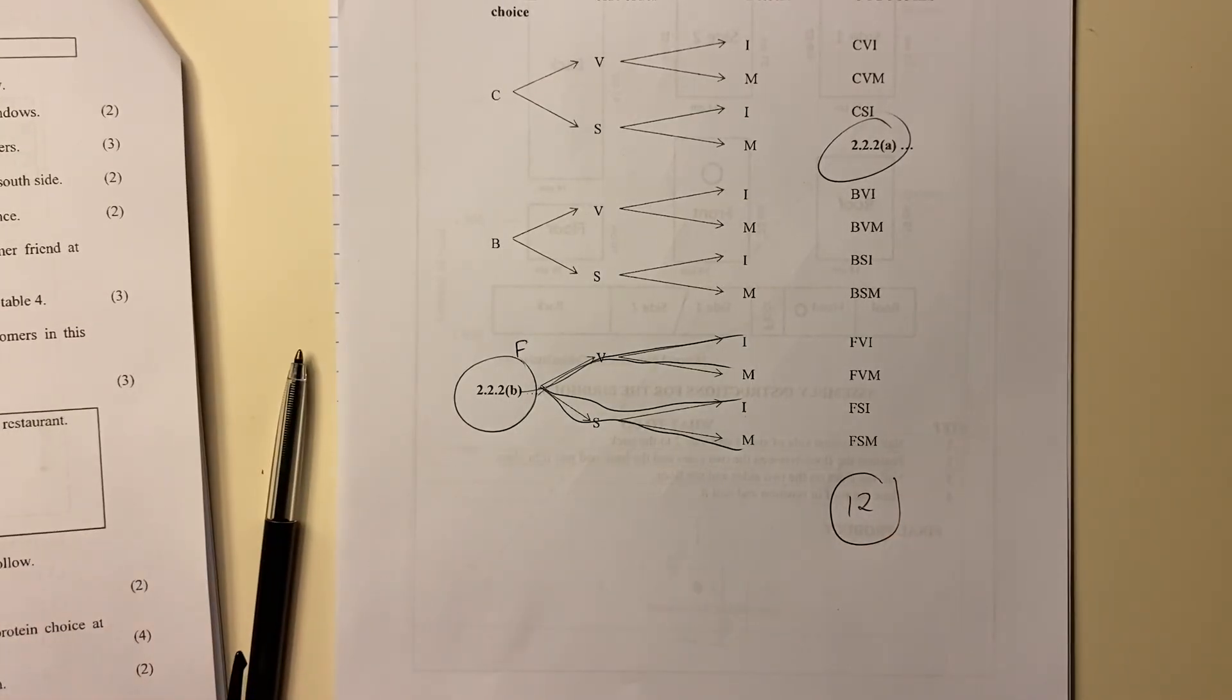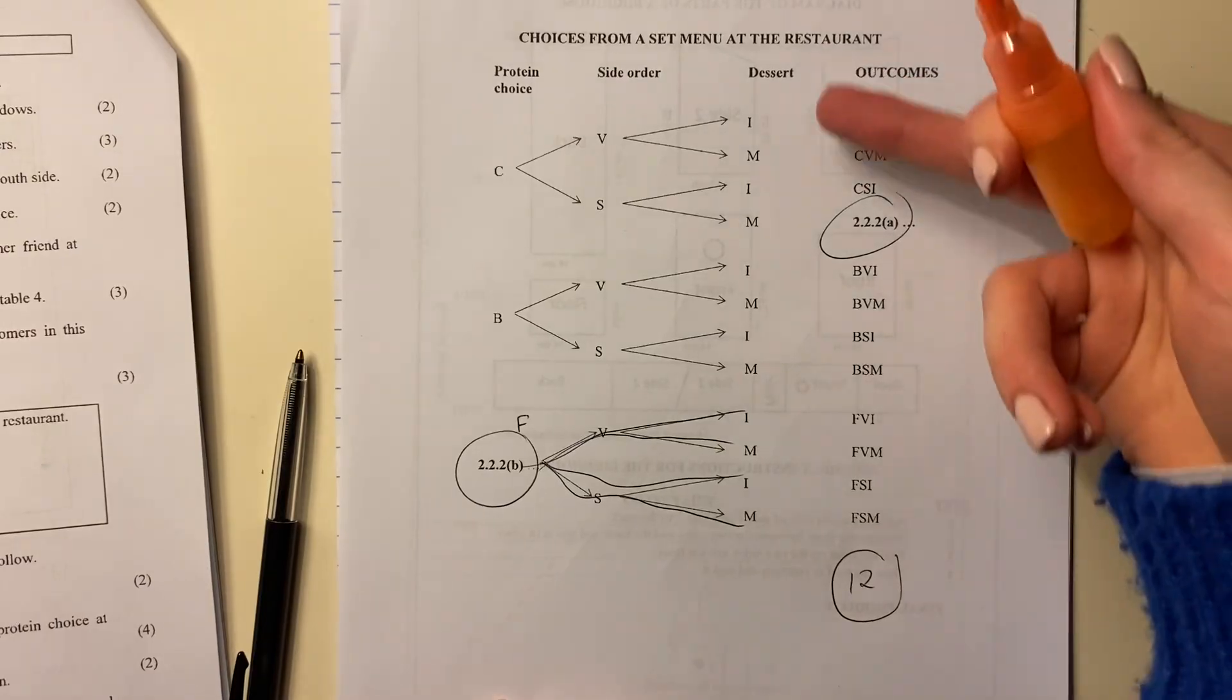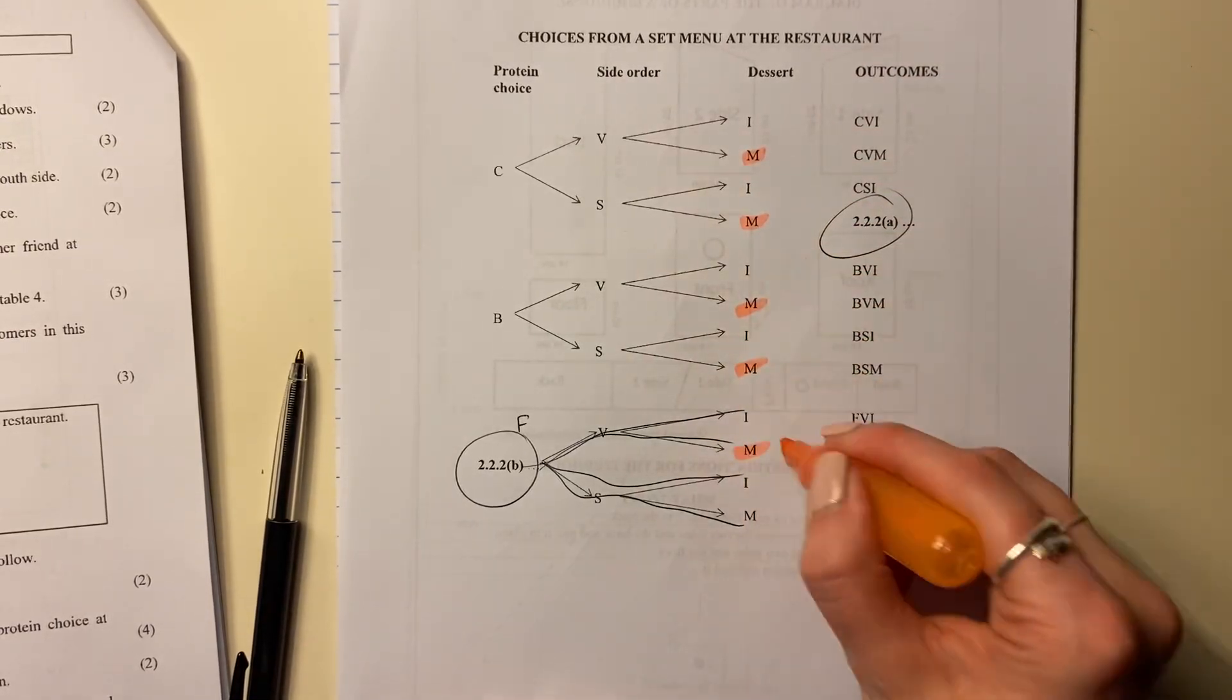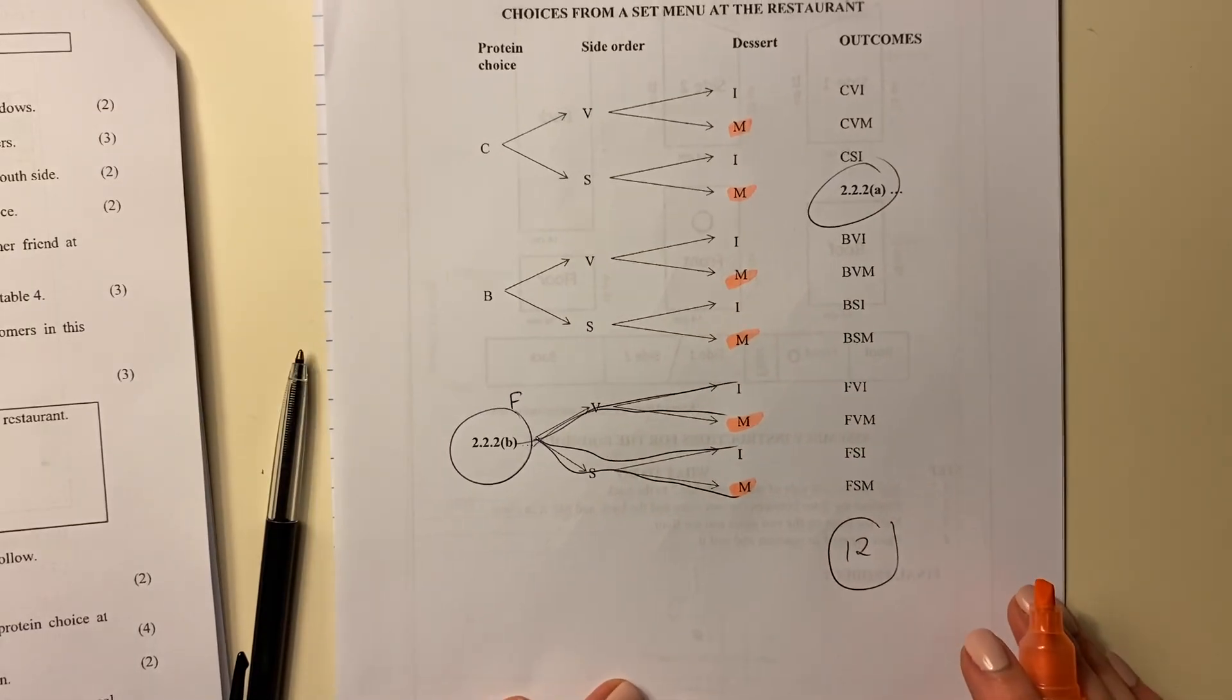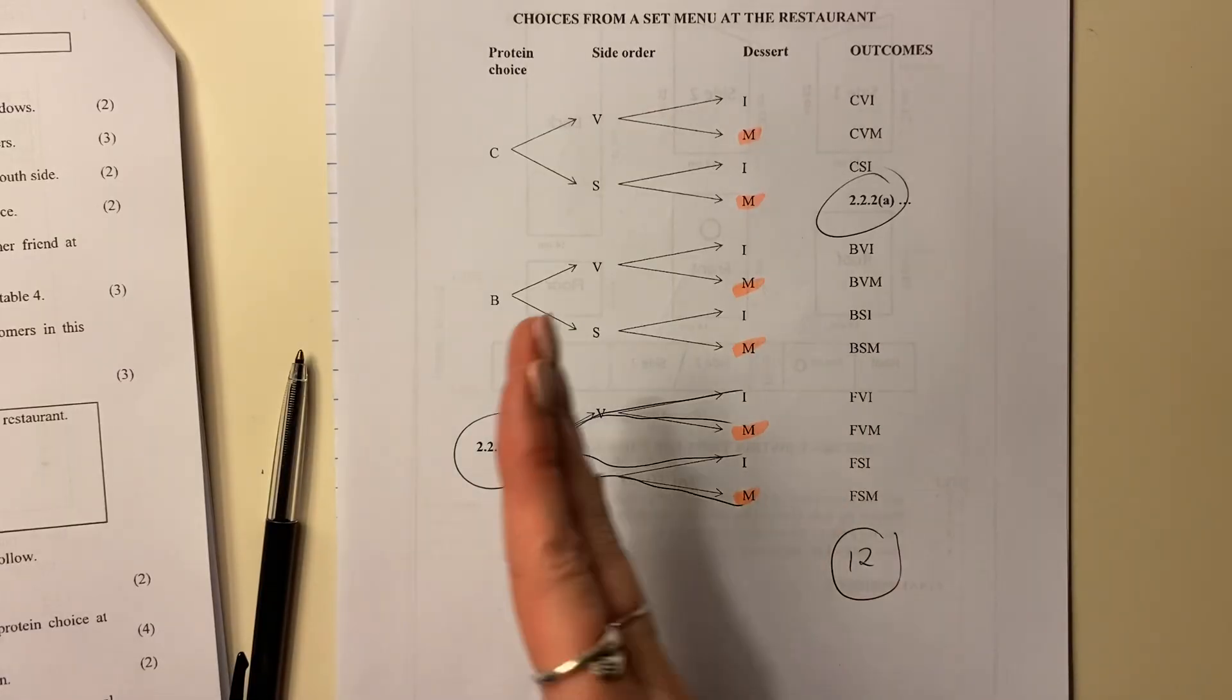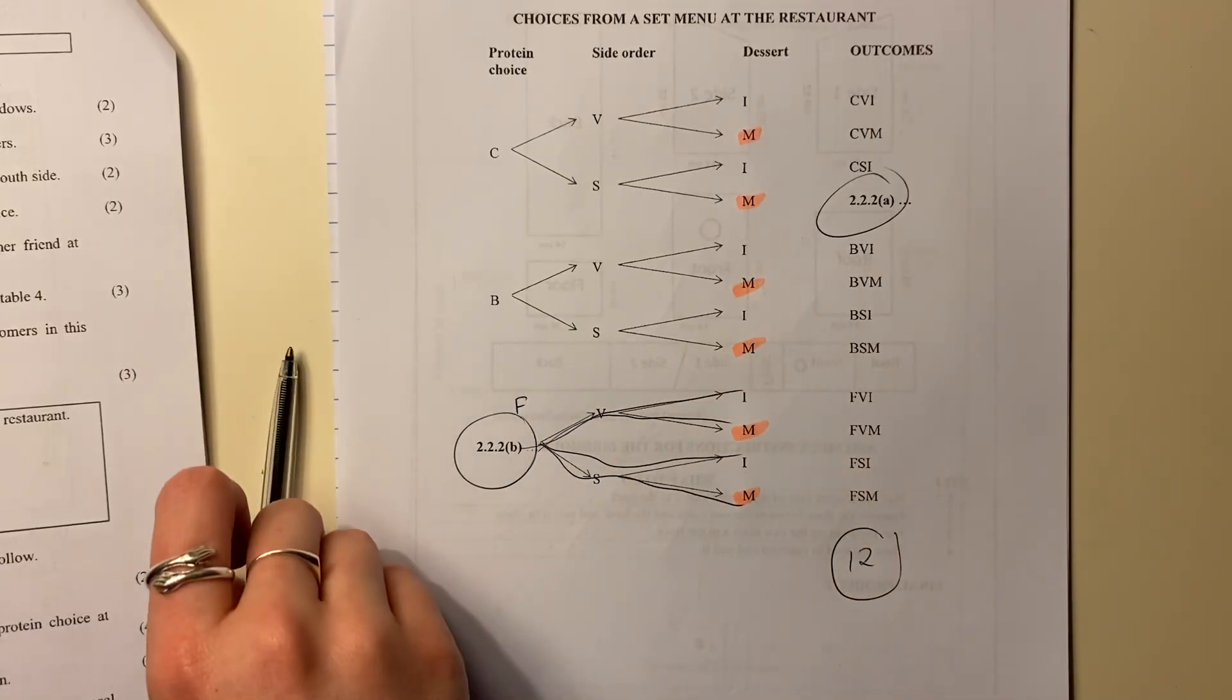So we want Malva pudding. So we see here, basically, it's in all the places where there's an M. One, two, three, four, five, six. So six of the 12 outcomes, because we just talked through why there's 12 outcomes, six of the 12 outcomes have Malva pudding.